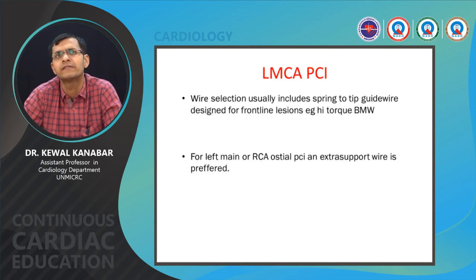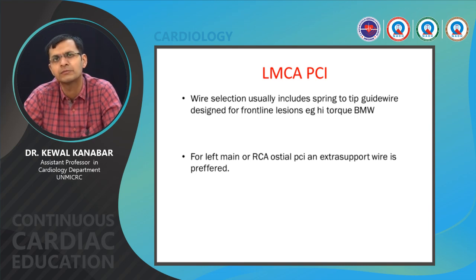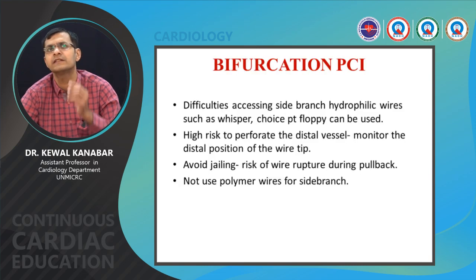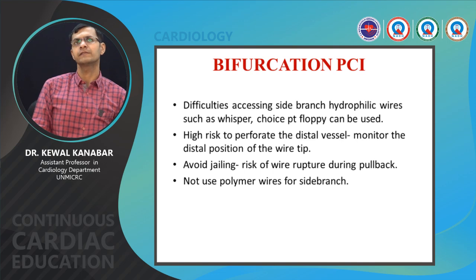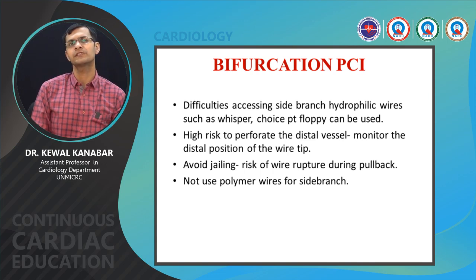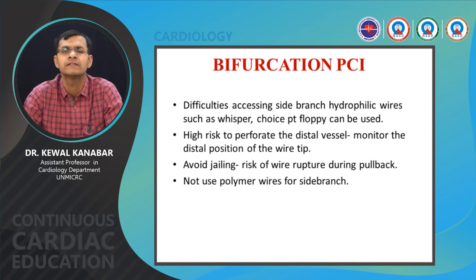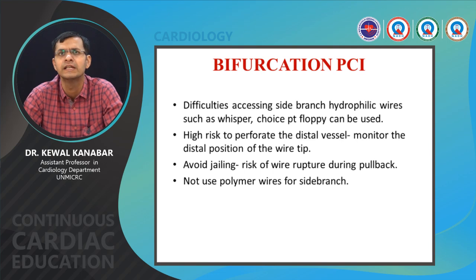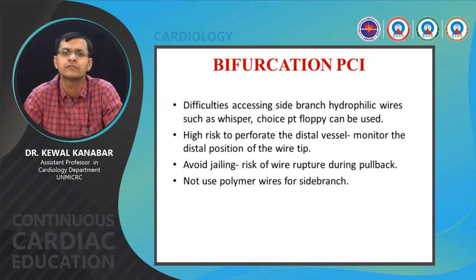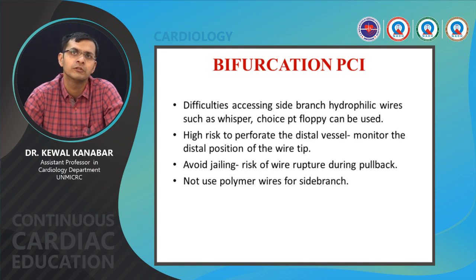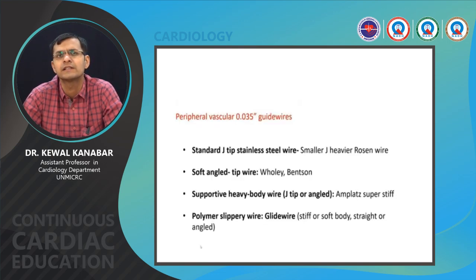For left main PCI, wire selection doesn't matter significantly — usually a spring coil tip wire for frontline lesions; most often done with BMW wire. For ostial lesions like left main ostium or RCA ostium, some prefer an extra support guide wire. For bifurcations, start with routine wires, but after stent placement with significant side branch pinching, you may need a Whisper or Pilot wire. Important: take care of distal vessels as Whisper and Pilot have a risk of distal perforation. Do not jail polymer coated wires — significant risk of wire fracture when trying to pull out a jailed wire.